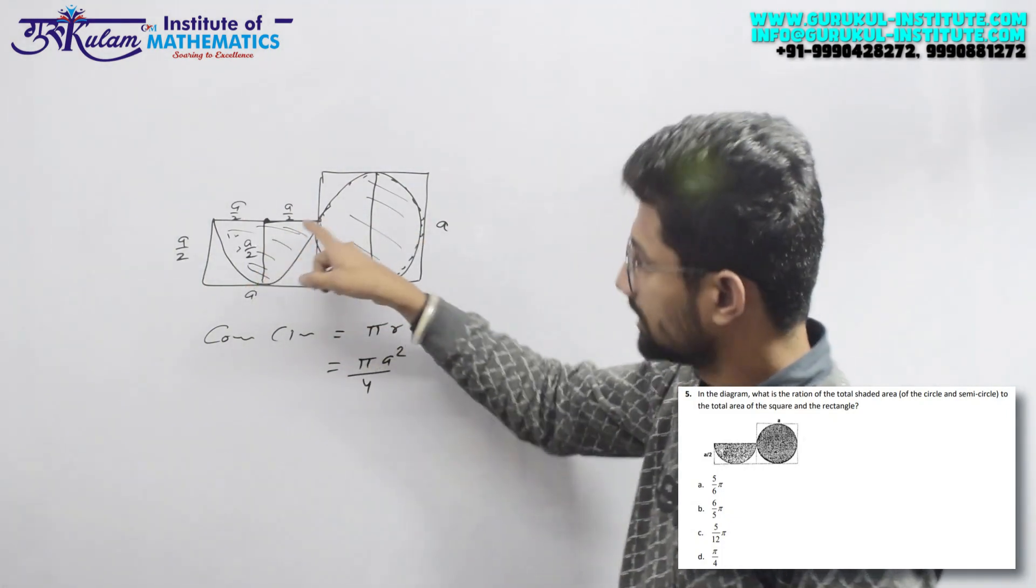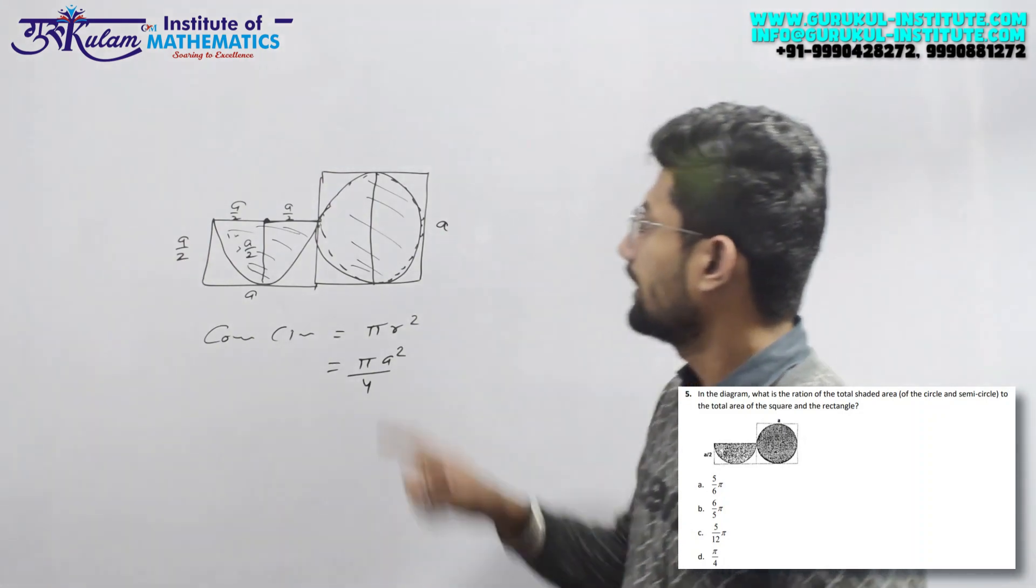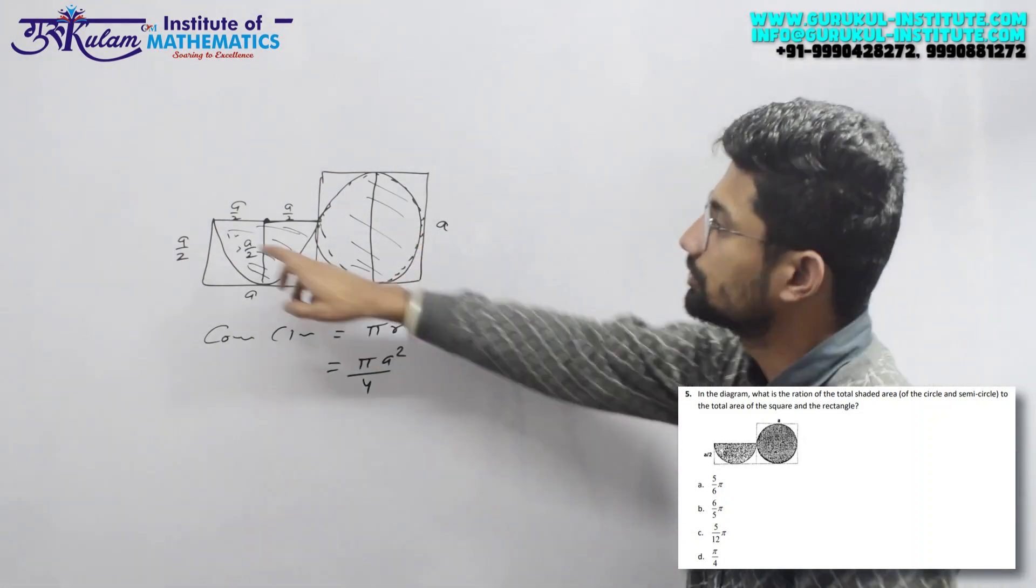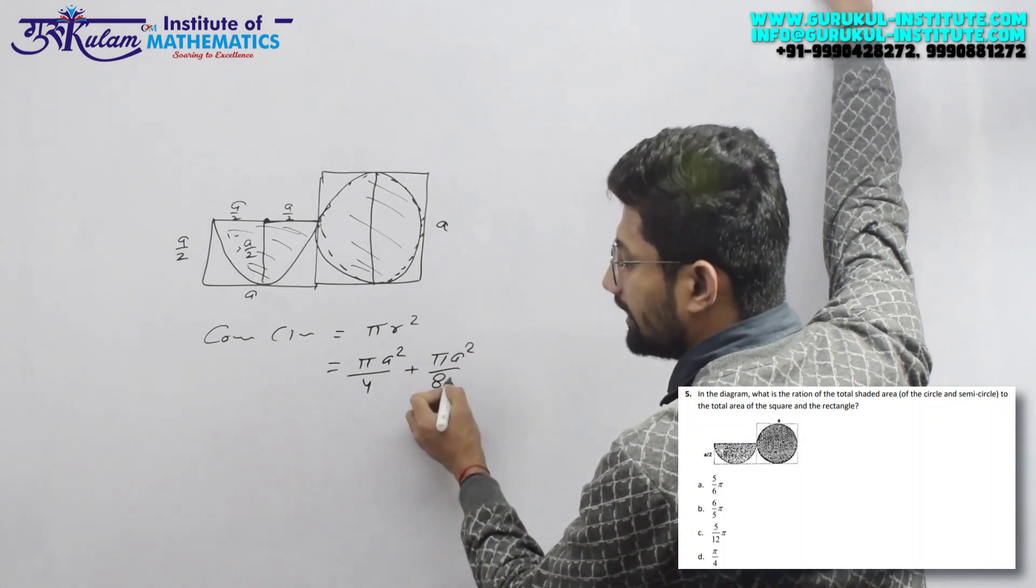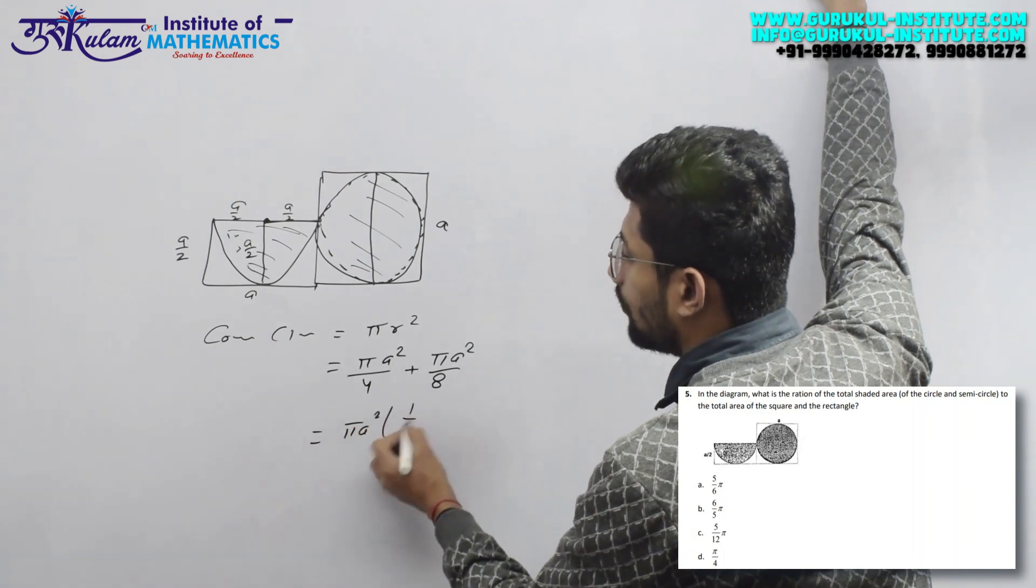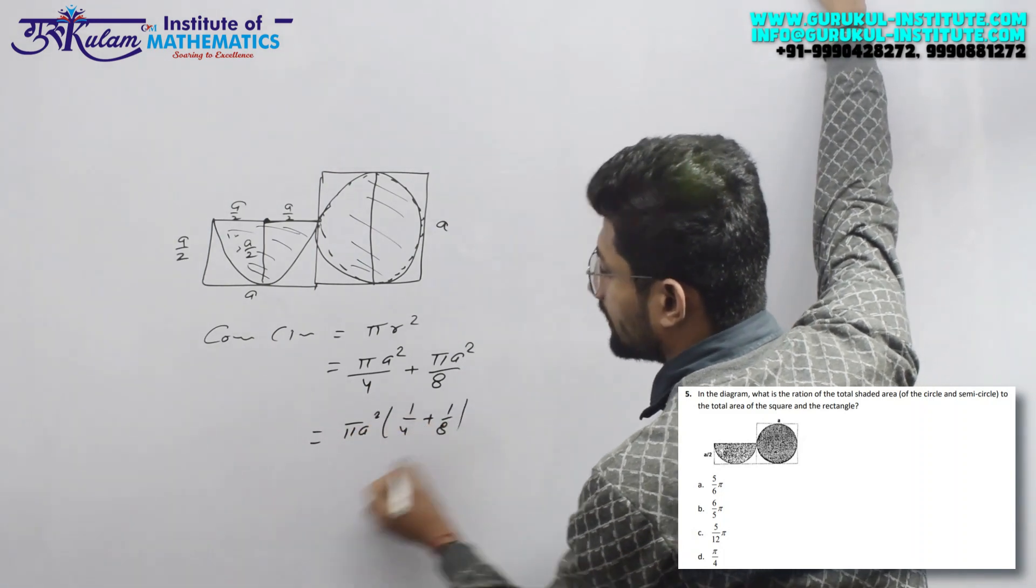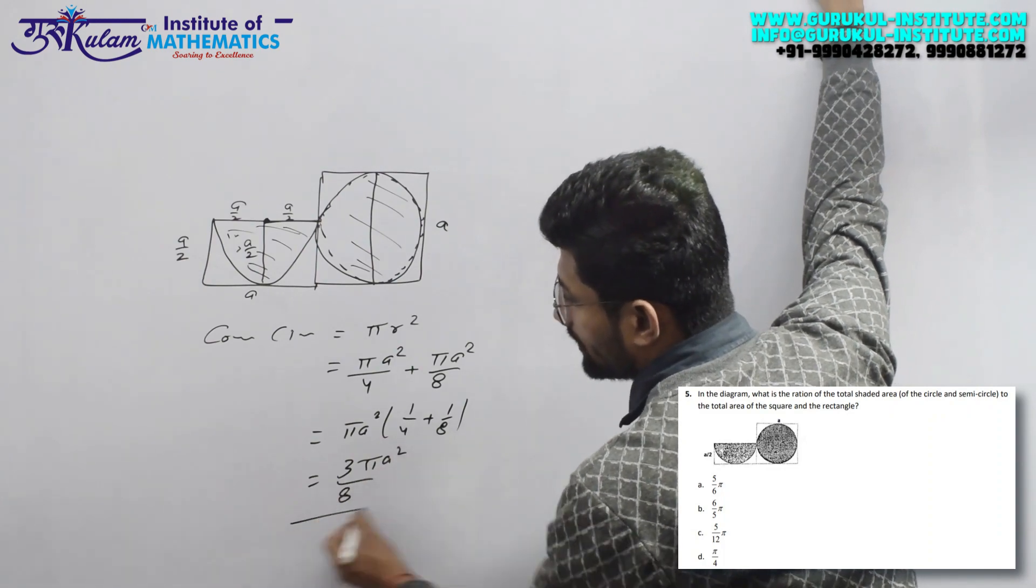Semicircle radius a by 2, radius a by 2, semicircle area π a² by 8. π a² comma 1 by 4 plus 1 by 8, that is 3π a² by 8.